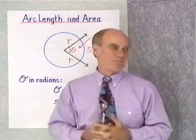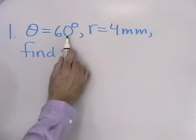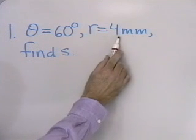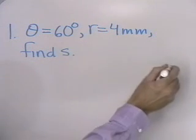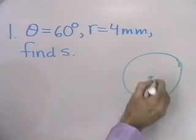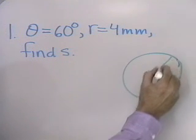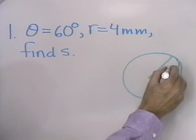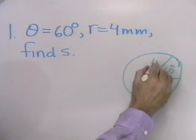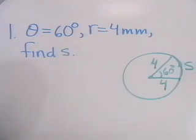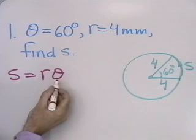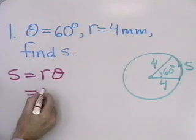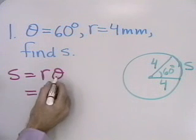Let's go to the board and work our first problem. Suppose that θ equals 60 degrees as a central angle in a circle with a radius of 4 mm. Let's find the arc length s cut off by angle θ. I have a central angle of 60 degrees, the radius is 4, and I want to find arc length s. My formula tells me that s equals r times θ, as long as θ is written in radians. So I'll put in r, that's 4 mm, times θ.